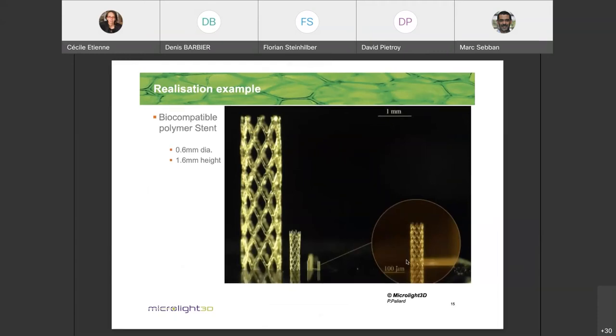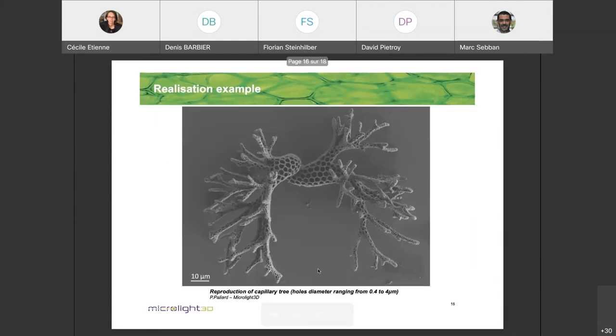Large, much larger object. Stent made in the bio compatible. The biggest one is 1.6 millimeter and the smallest one is about 300 micron.